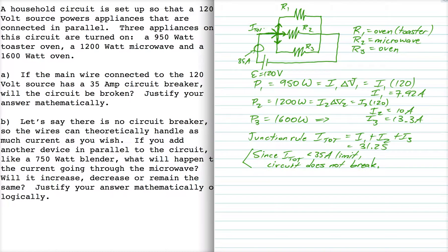For the second part, it says we want to add another device in parallel, like a 750 watt blender. What will happen to the current going through the microwave? Okay, so let's draw this out here. So now we've got four devices connected in parallel.